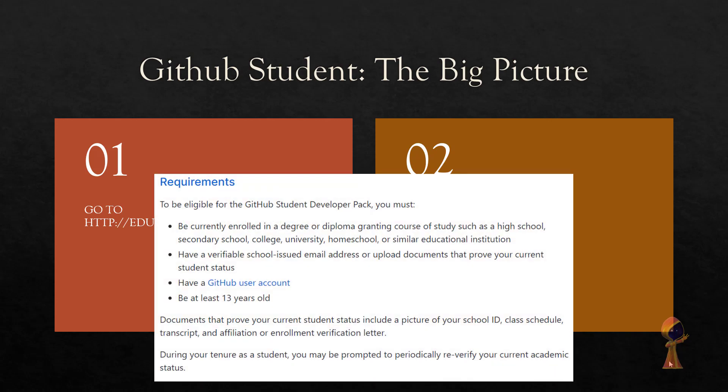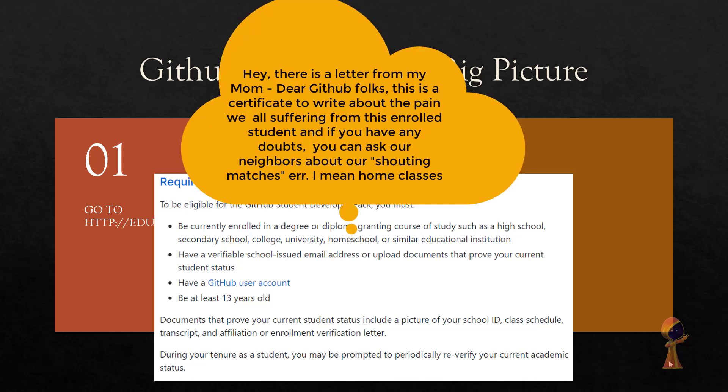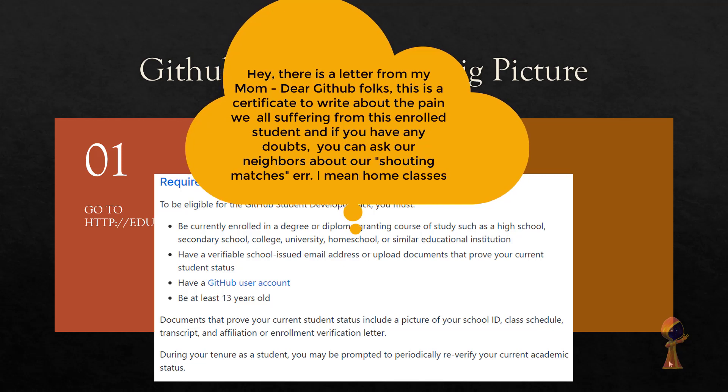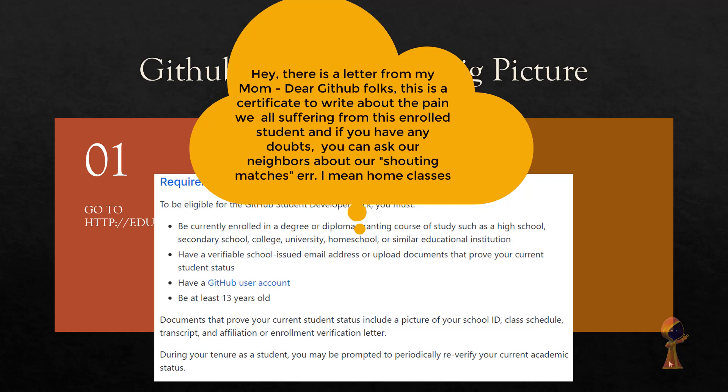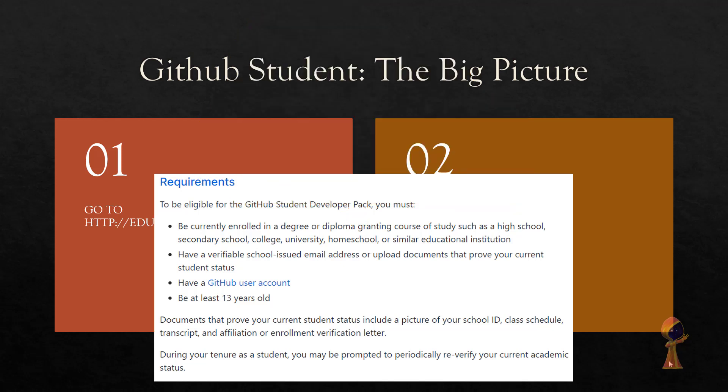To be eligible, you have to be part of a degree program or diploma-granting course such as school, high school, secondary school, college, university, or even homeschooling or a similar educational institution. You need to have a school-issued email address or upload documents that prove you are a student — such as a picture of your school ID, class schedule, a transcript, or an affiliation or enrollment verification letter. So you give those details and that's it.